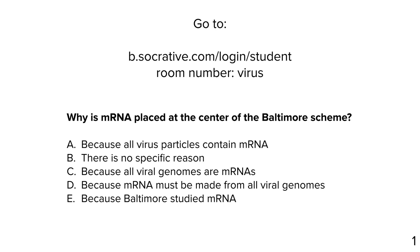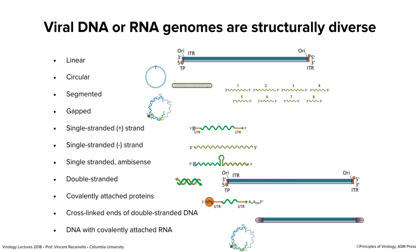Why is mRNA placed at the center of the Baltimore scheme? 97% correctly answered D — because all viral genomes must make mRNA. That's exactly right. Option A — because all virus particles contain mRNA — is wrong, because many particles do not. Viruses with double-stranded DNA, for example, don't have mRNA in the particle. mRNA is a very specific molecule: it's RNA, and it's of plus polarity.